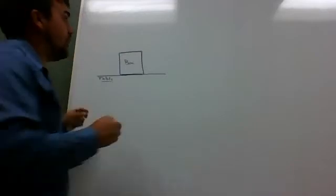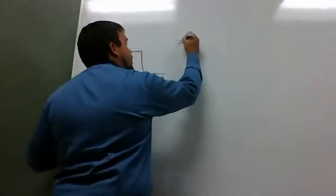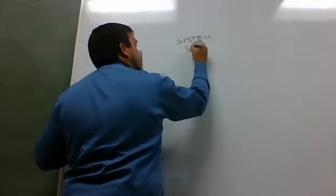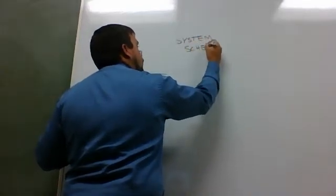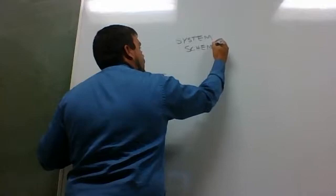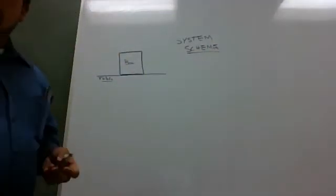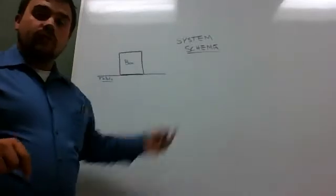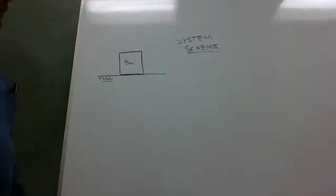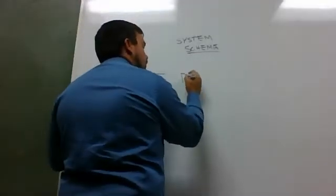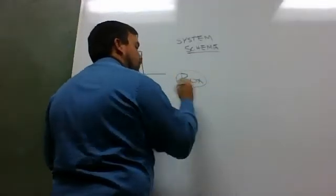And so what I'm going to start here is what's called a system schema. And on unit four worksheet one, I'm going to ask you to do a system schema for every single problem. So the first thing I'm going to do is I'm going to say, okay, I know that there is a box. So I'm going to write box, circle it.